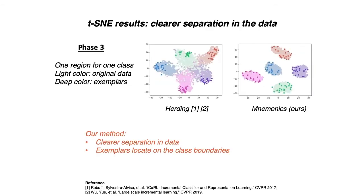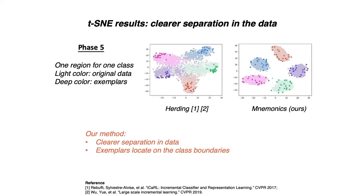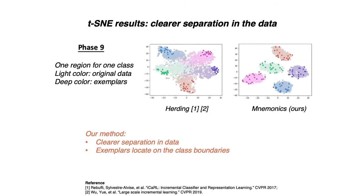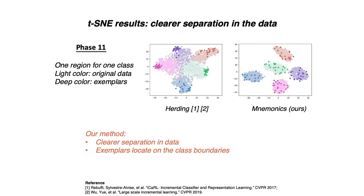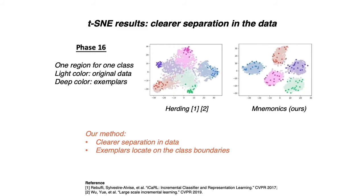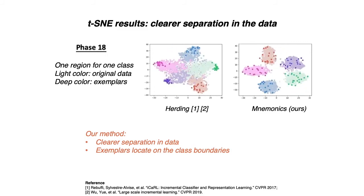In this t-SNE visualization, each color region is for one class. For each class, deep color points are the exemplars, and the light-colored ones are the original data here for reference only.